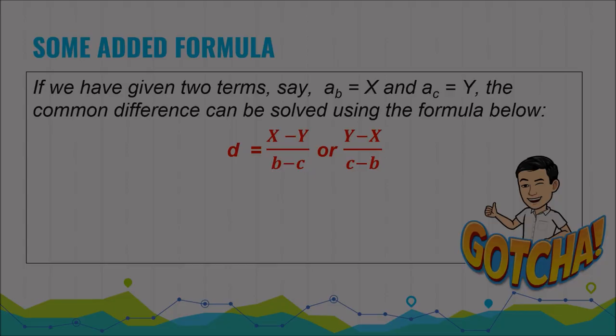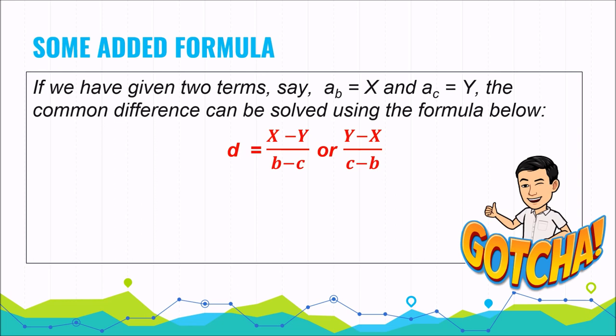Here is an additional formula. If we have two given terms — say a sub b equals x and a sub c equals y — the common difference can be solved using: d equals x minus y over b minus c, or equivalently y minus x over c minus b.